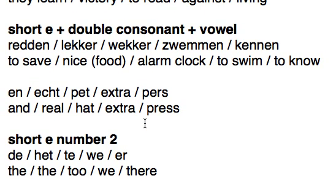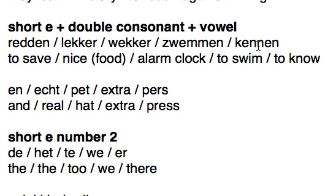Now we go to the short E. We'll start with the A sound: when you have a short E plus a double consonant plus a vowel, it will usually be pronounced as A. For example: redden, lekker, wekker, zwemmen, kennen. This is also typical for verbs with double consonants — kennen, zwemmen, meaning 'to know' and 'to swim'.